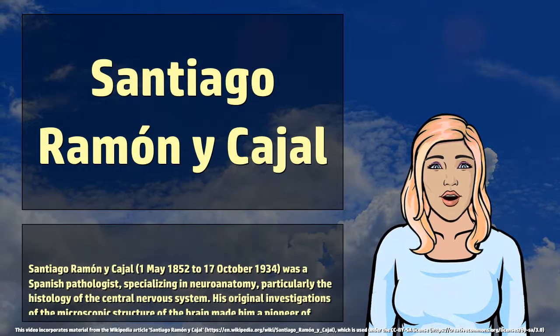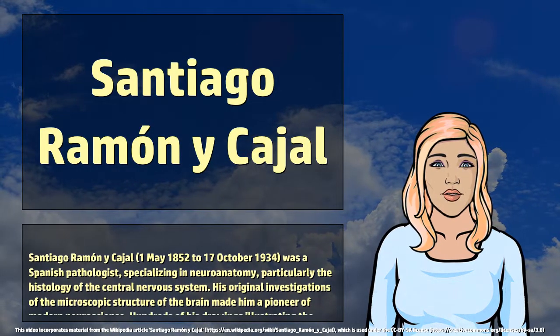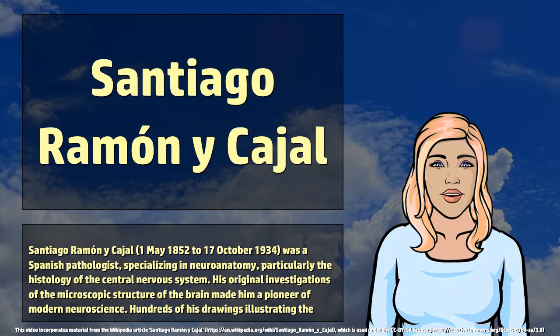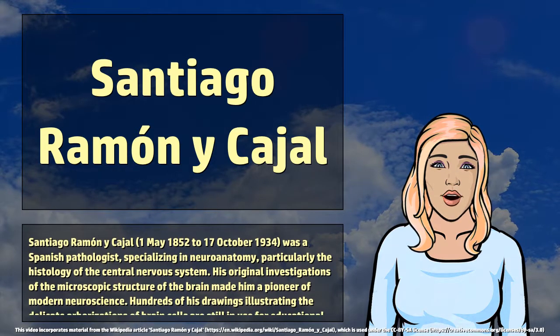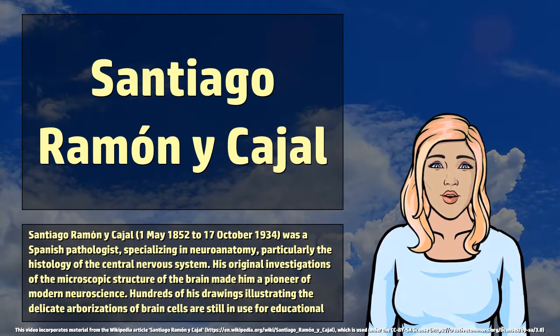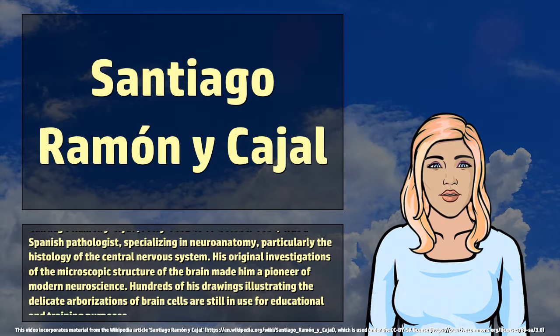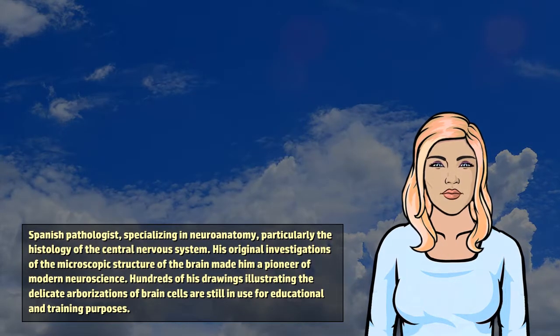Santiago Ramon y Cajal, May 1, 1852 to October 17, 1934, was a Spanish pathologist specializing in neuroanatomy, particularly the histology of the central nervous system.